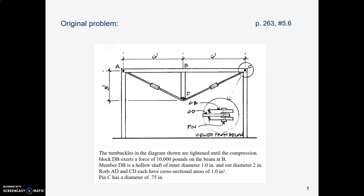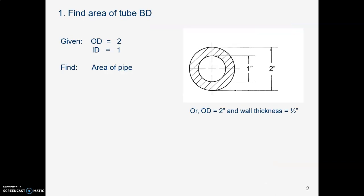And we're going to boil this down into steps, simple steps, one step at a time. Let's start with that rod BD, or that pipe BD. So it's hollow. In other words, it's a pipe or a tube. Inside diameter of 1 inch, outside diameter of 2 inches.